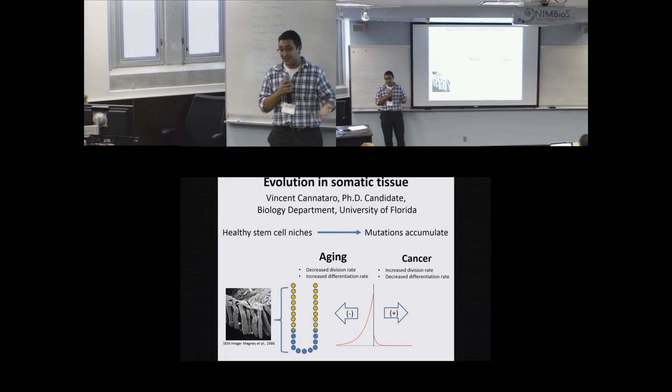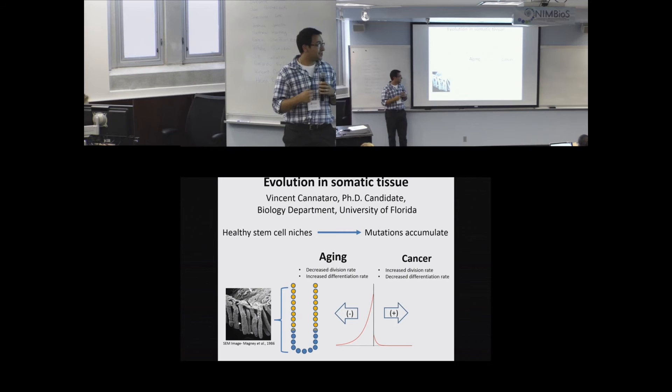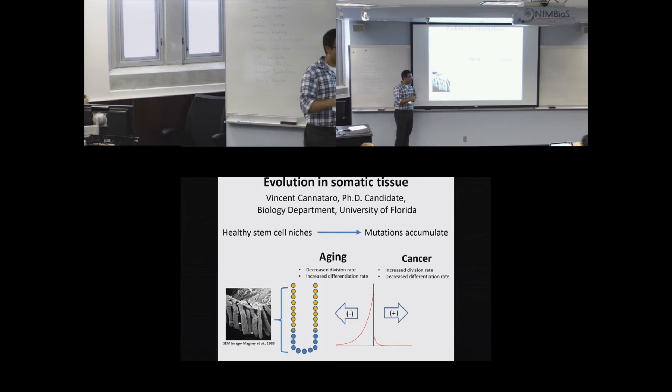Mutations can affect the fitness of cells: some increase division rate or longevity — increasing fitness and potentially forming a tumor. Most mutations hinder a cell's ability to divide or decrease longevity, decreasing fitness and causing tissues to develop an aging phenotype with fewer stem cells replenishing epithelial layers.